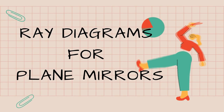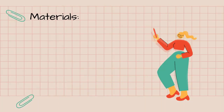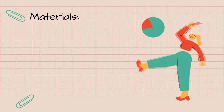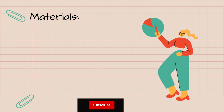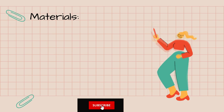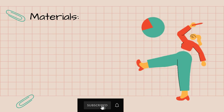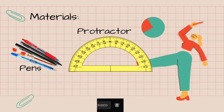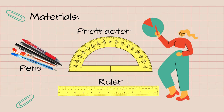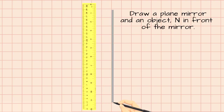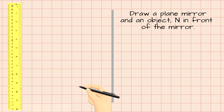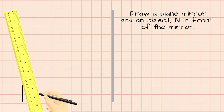Ray diagrams for plane mirrors. To do the activity you will need the following materials: pens, protractor, and ruler. Procedure: draw a plane mirror and an object in front of the mirror.